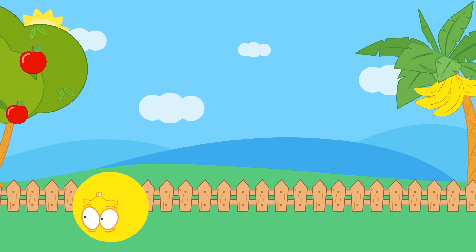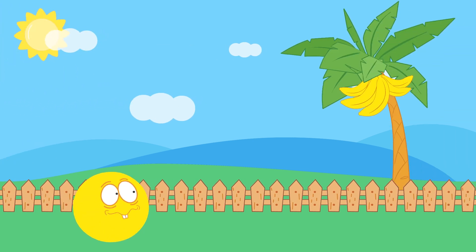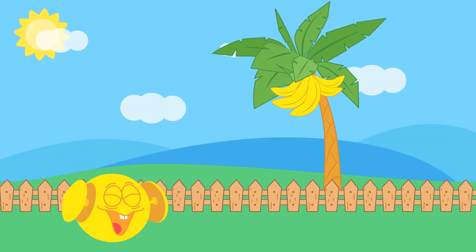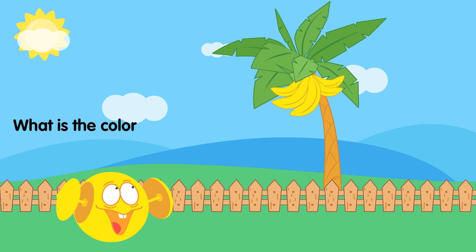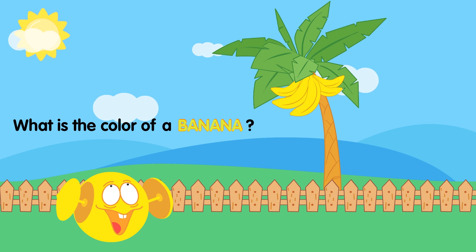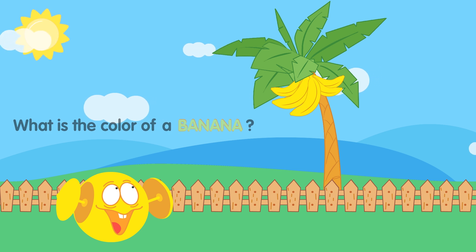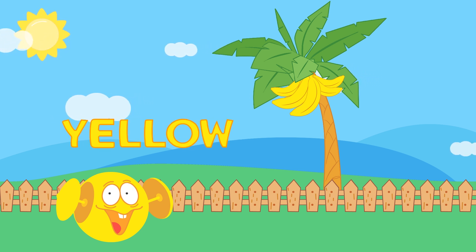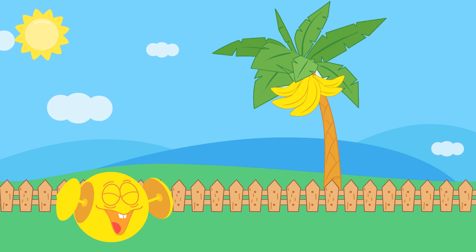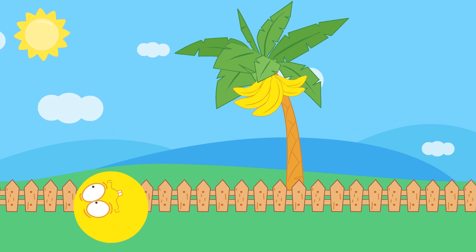Hi, Clang! Ooh, a banana tree! What is the color of a banana? Yellow! Yay! We got that right!